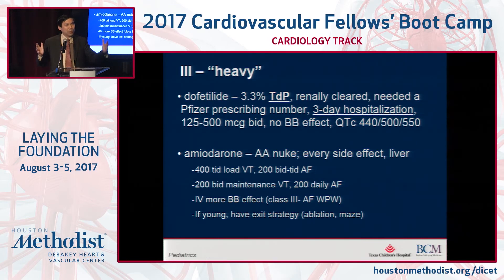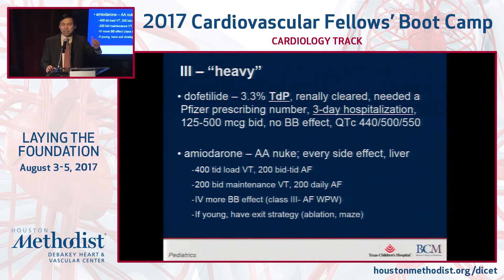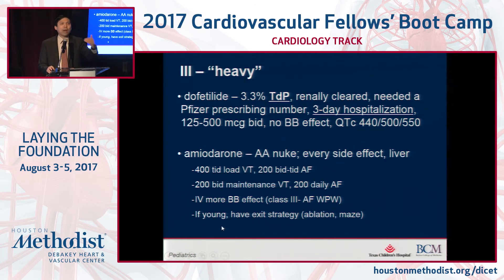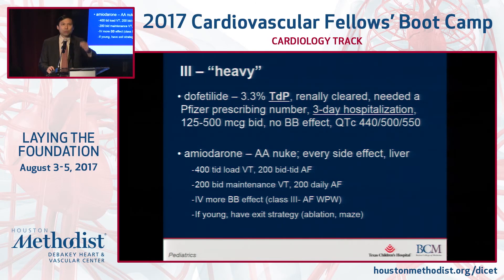Amiodarone — you guys have heard about it and used it. It's a lot of people's bread and butter. It is the nuclear missile of antiarrhythmics: it hits and blows up every arrhythmia — AFib, VT — but it also causes a lot of peripheral collateral damage. It is liver metabolized, with higher-dose loading for VT compared to atrial fibrillation; maintenance doses are listed on the slides. The IV form has a little more beta blocker effect, so be cautious not to use it in AFib with WPW. For younger patients, we always want to have an exit strategy — figure out if it was post-op and they'll move away from the stressor, or offer them ablation or a surgical maze with valve repair or replacement, because amiodarone is a medicine you don't want young people exposed to long-term.